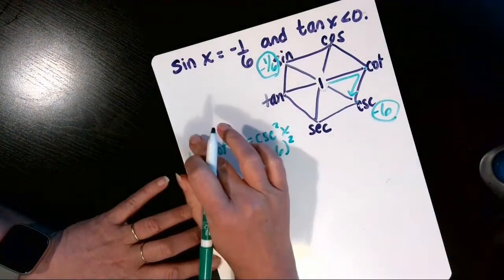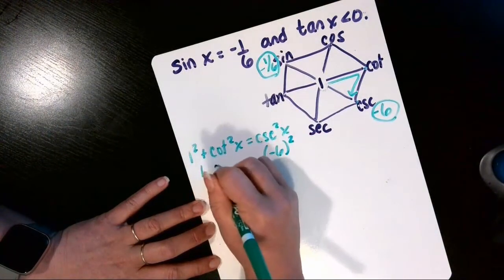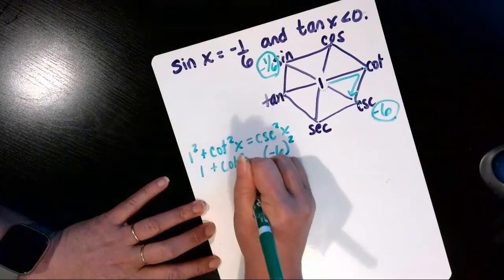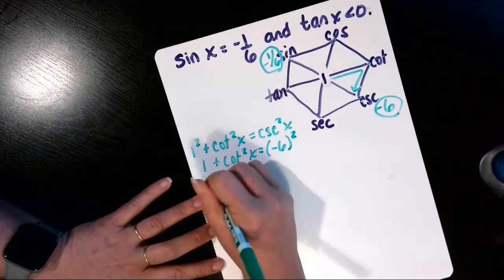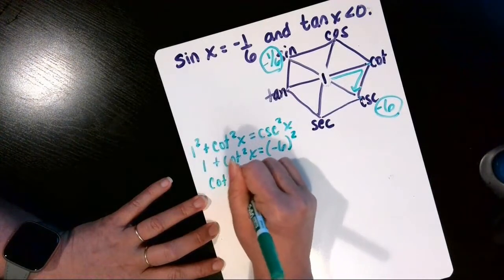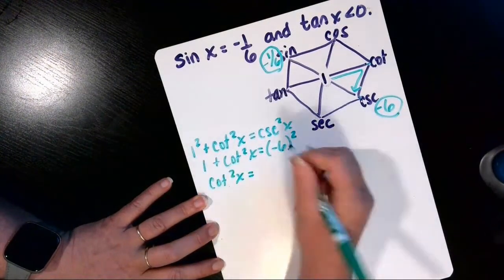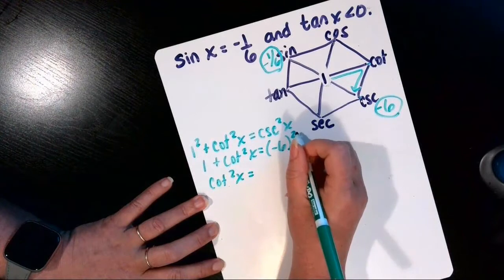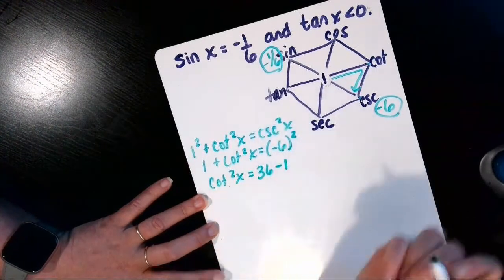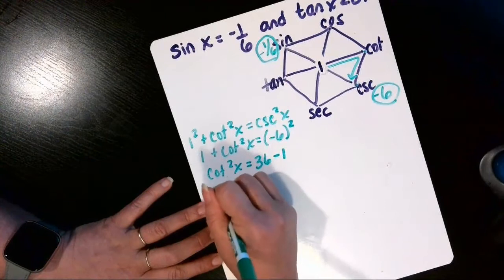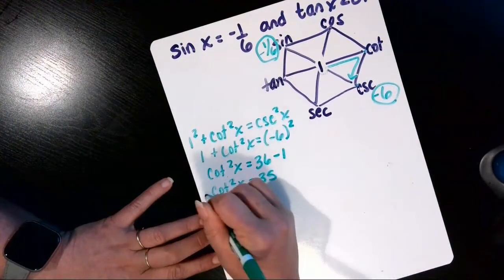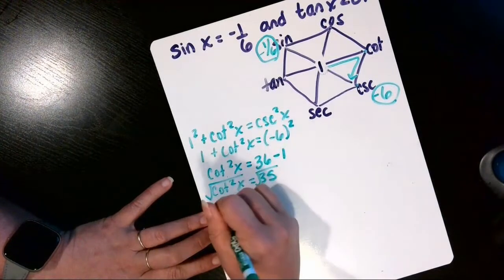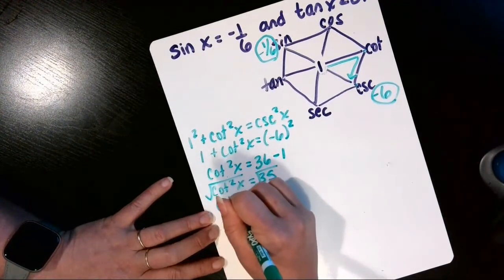1 squared is just 1, so we'll have 1 plus cotangent squared x equals negative 6 quantity squared. We'll move that 1 to the other side by subtracting. Negative 6 times negative 6 is 36, and then minus 1 is 35, so cotangent squared x equals 35.